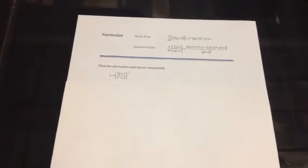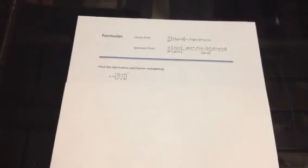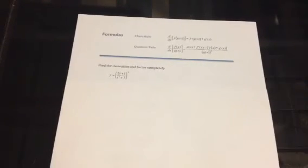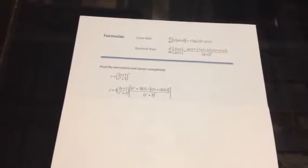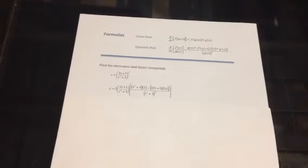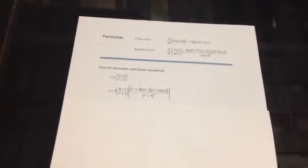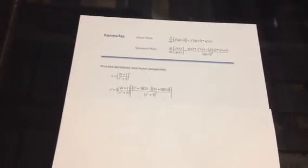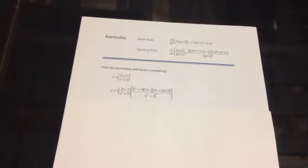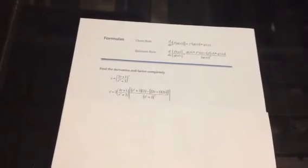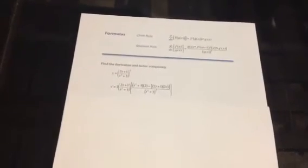We're given a complicated problem, but with two rules, we're going to be able to find the derivative and factor completely. Because we have a power of 2, we will start with the chain rule. We'll bring the 2 in front of our first term, then take our term and find its derivative.